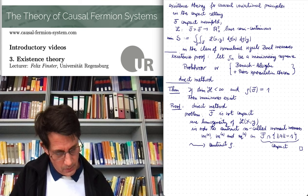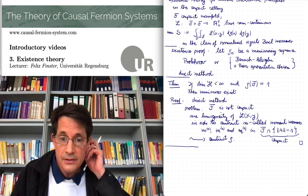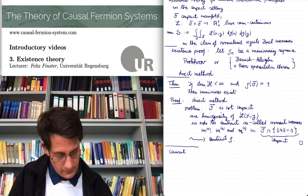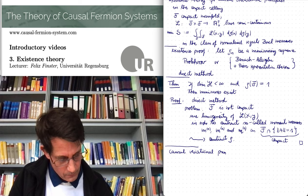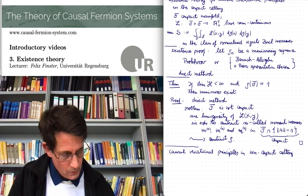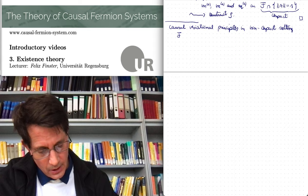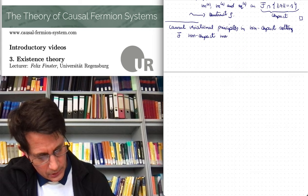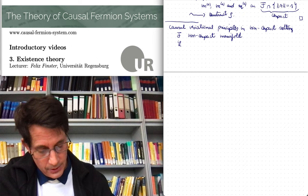So far, so good. So now there is one more case which has been treated, which works in a somewhat different way, namely causal variational principles in the non-compact setting. So this means F is now a non-compact, say, manifold or locally compact Hausdorff space, whatever, non-compact smooth manifold. And L is again lower semi-continuous.